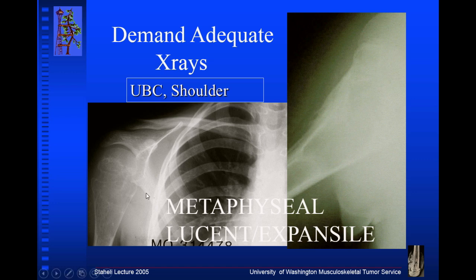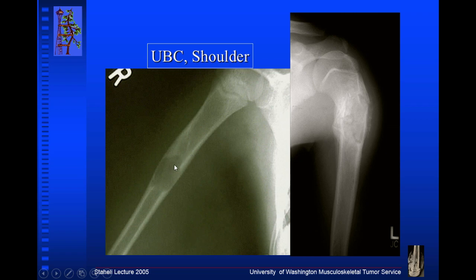I'm going to show you a bunch of x-rays to teach you very quickly. This is not a great x-ray of the shoulder — it's picked up on a chest x-ray — but it's very suggestive of a benign bone cyst of the shoulder. Don't accept this as an adequate x-ray; demand good x-rays to show you the cyst in this humerus. Here's an example of that cyst that's moved down the arm because the growth plate has grown away from it, and then fracture risk increases because the wall of the pipe — the cortical bone — is almost completely eliminated by this very benign bone cyst.